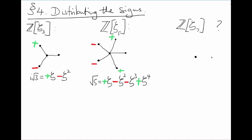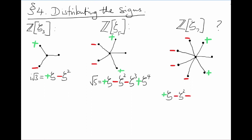Maybe we can just try something like this for zeta₇. With a bit of trial and error, we might stumble across a combination of plus and minus signs that gives us the square root of 7. For example, let's put plus signs here, minus signs here, and minus signs here. So: plus zeta, minus zeta squared, minus zeta cubed, minus zeta to the 4, minus zeta to the 5, plus zeta to the 6. Conjugate roots have the same sign, so the imaginary parts will cancel out and this will end up on the real line.